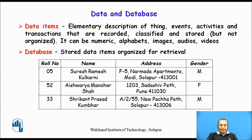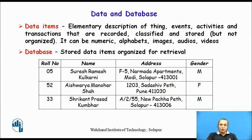The difference between data and a database is that data is simply the description of a thing, event, or activity — these are called data atoms. But when data is stored in an organized way so that it is easy to retrieve information from it, it is called a database. A simple example is class data stored as a table of rows and columns, where each row corresponds to a student record and each column corresponds to a particular attribute, making it easy to retrieve information.